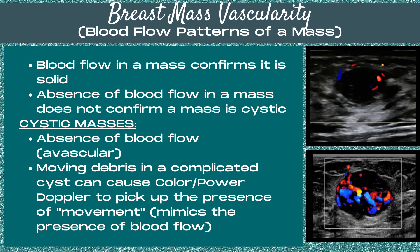When looking at vascularity in a breast mass, blood flow in a mass confirms that the mass is solid tissue, but it does not confirm benign versus malignant disease. Also, absence of blood flow does not confirm the mass is cystic, because some benign solid masses are avascular. For cystic masses in the breast, there's an absence of blood flow known as avascularity. Note that moving debris in a complicated cyst can cause color or power Doppler to pick up the presence of movement, which mimics blood flow.